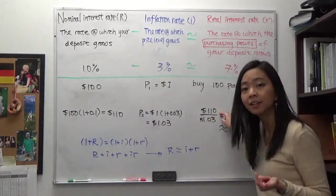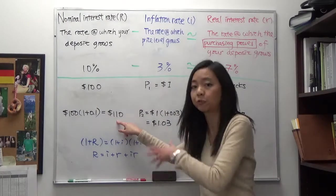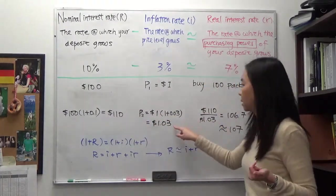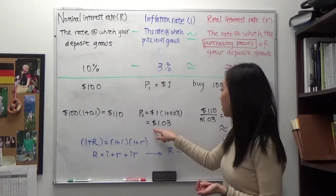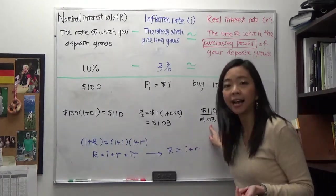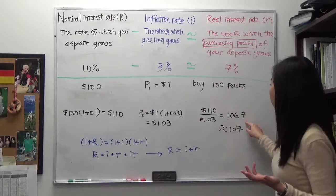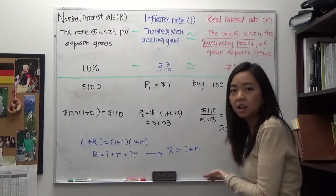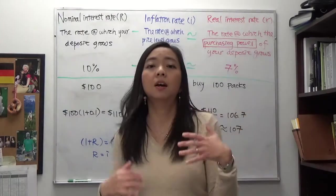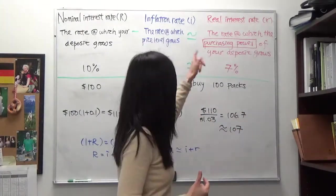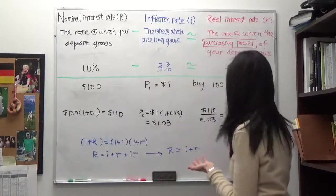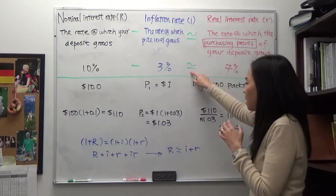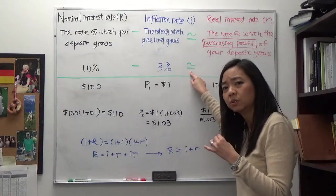...by the price of chalks this year, so there will be a dollar and three cents. And after you calculate that you get 106.7 which is approximately equal to 107. So your real interest rate tells you approximately the purchasing power of your deposit has grown by seven percent. So now you wonder why is it approximately equal to, why is it not equal to seven percent?